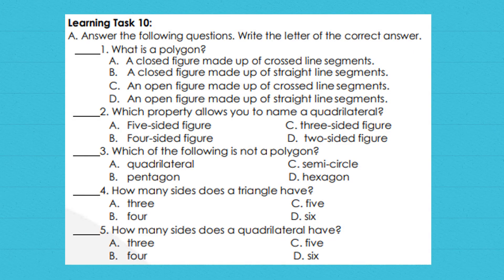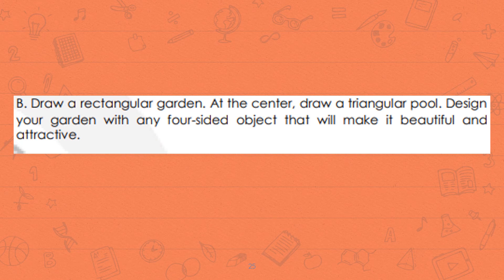For our final learning tasks: A. Answer the following questions. Write the letter of the correct answer. B. Draw a rectangular garden. At the center, draw a triangular pool. Design your garden with any four-sided object that will make it beautiful and attractive.